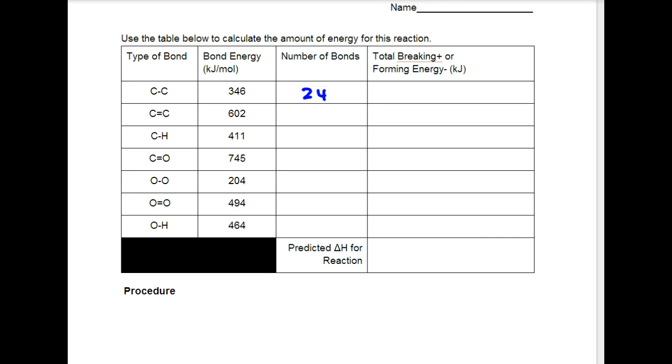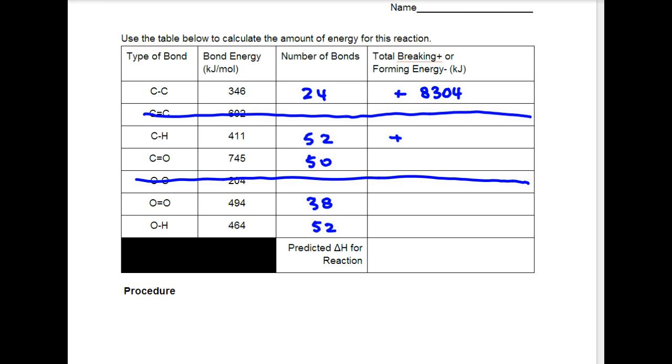So on the next page, we're just transferring everything that we have from the previous page that we found. These, even though they're there, we're not using them, because we don't have any of those bonds. And then we just have to calculate whether they're breaking or forming. And in the case of breaking, it's positive. And in the case of forming, it's negative. So here it's a positive, 8304. Here it's a positive, 21,372. And the sum of all of these numbers is negative 12,930 kilojoules. So that's what we have for the total amount of energy that's produced when one mole of paraffin is burned.